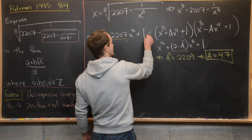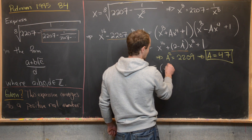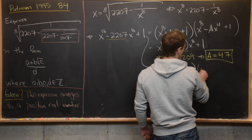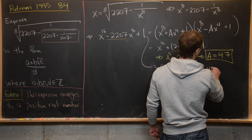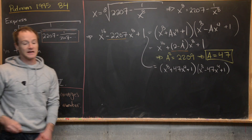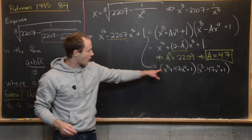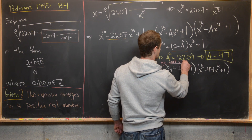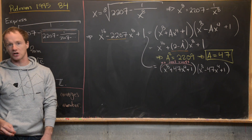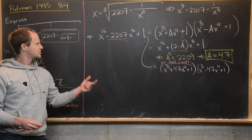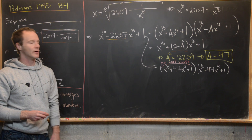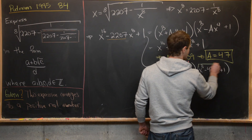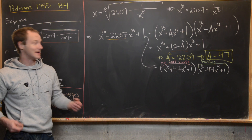So we can write our degree-16 polynomial as (x to the eighth plus 47x to the fourth plus 1) times (x to the eighth minus 47x to the fourth plus 1). Now we play the same game again. Notice the first polynomial has no real roots — it has two even-degree terms plus 1, so it's always above the x-axis. Thus we just need to factor the second polynomial.